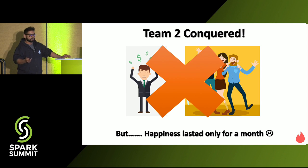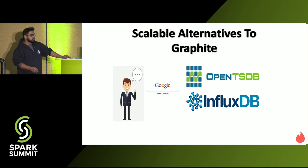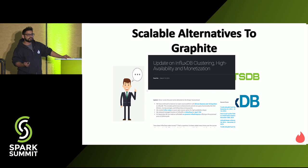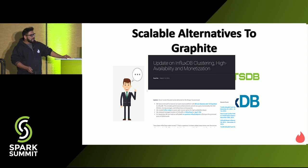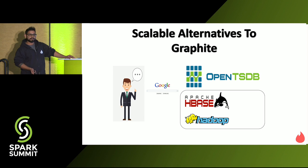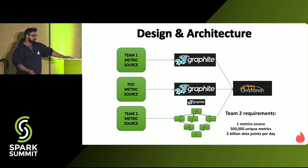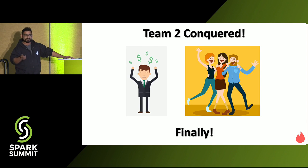He searched for alternatives to Graphite. A couple at that point were OpenTSDB and InfluxDB. He looked at InfluxDB but there was a monetization plan — clustering was not free for open source — so he discarded that because he didn't want to spend money on other companies. He went with OpenTSDB, but there's a big problem: it doesn't come alone. It comes with a whale — HBase — it comes with an elephant — Hadoop — and a Zookeeper to handle those animals. But he was hardworking, so he took this big infrastructure and replaced the cluster with it. Finally he was able to satisfy team two's requirements using OpenTSDB and its scalability through Hadoop.